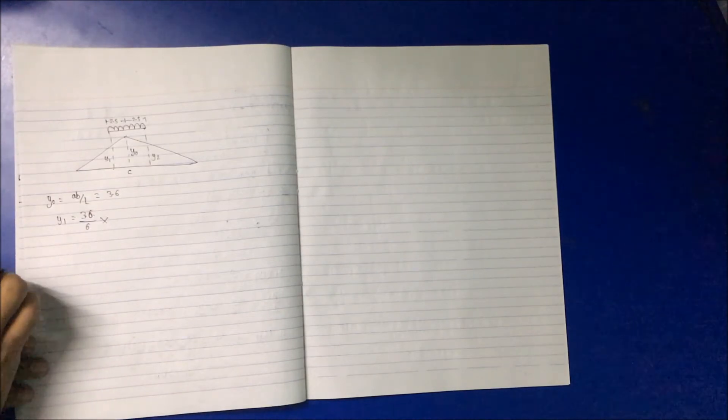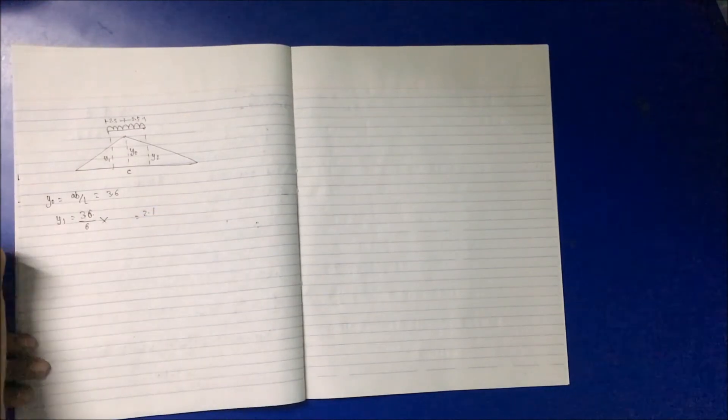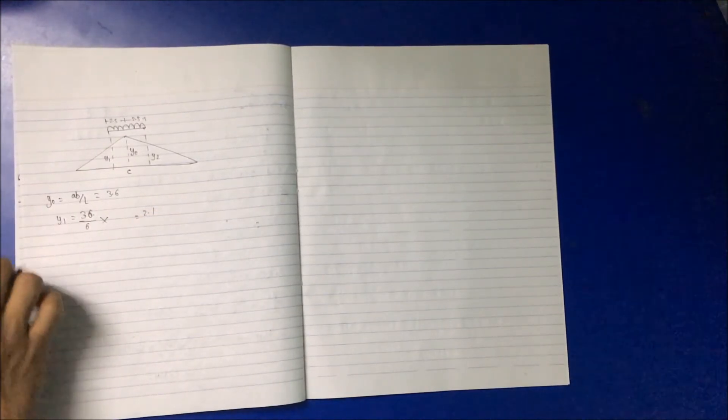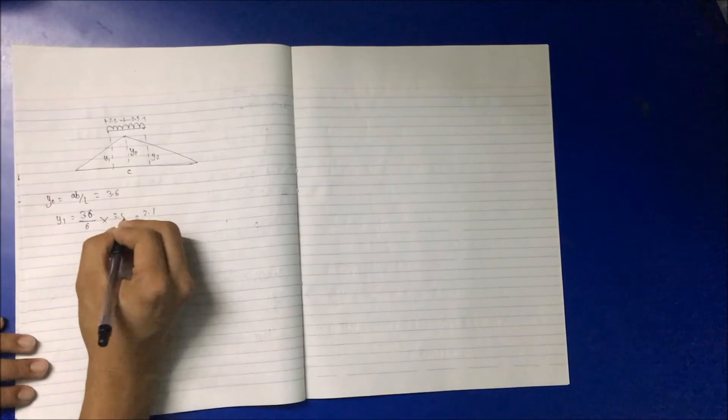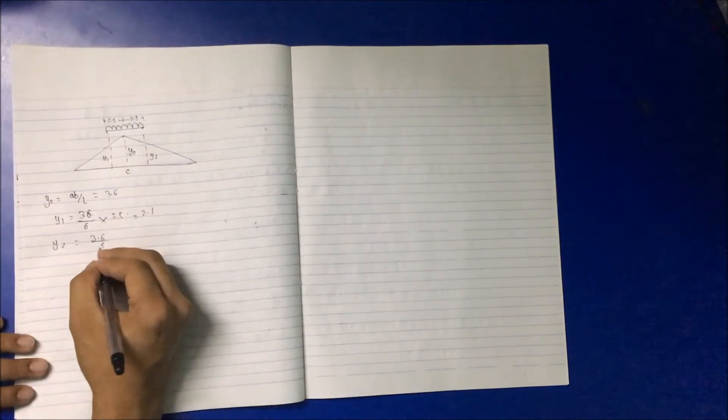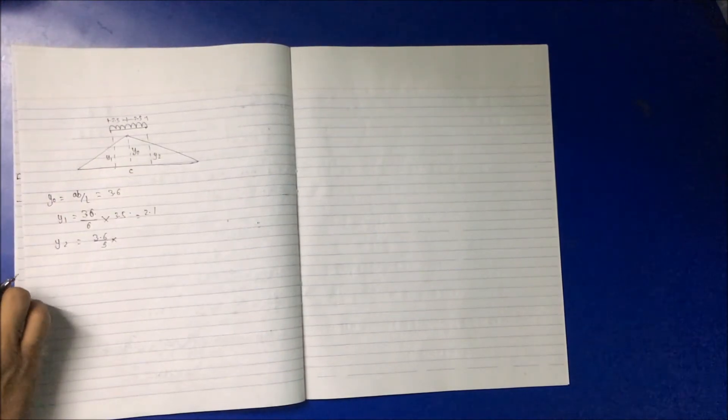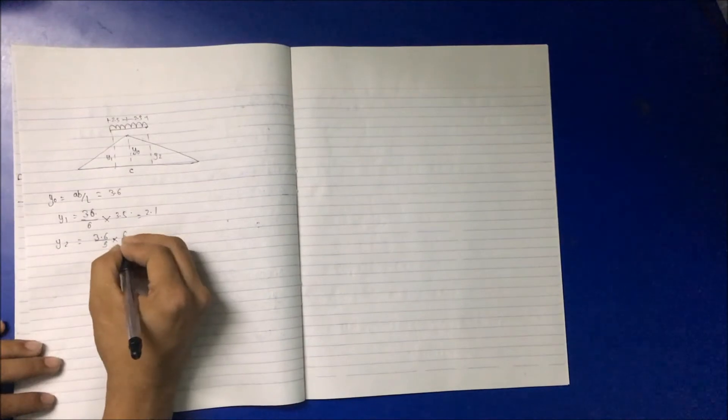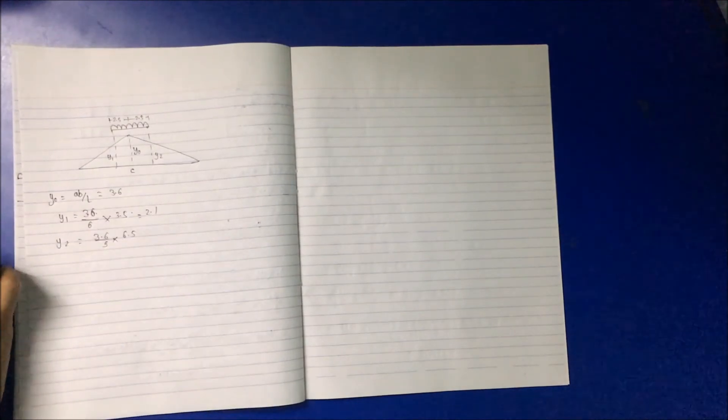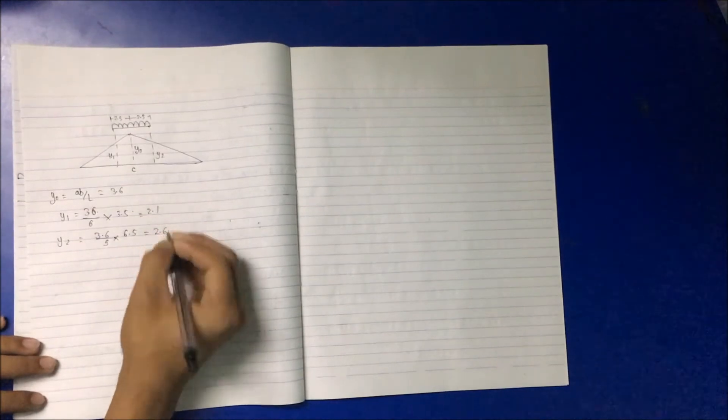Here y2: 3.6 divided by 9, multiply by this distance, 9 minus 2.5, 6.5, into 3.6 divided by 9, we get 2.6. We have now calculated all the perpendicular distances.